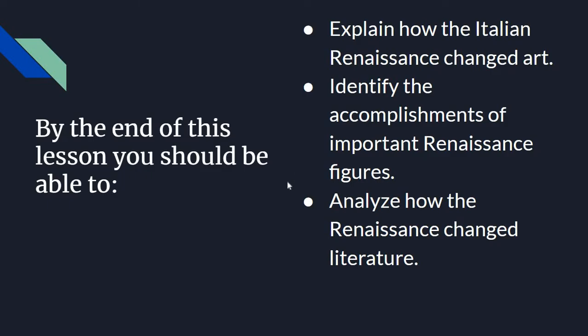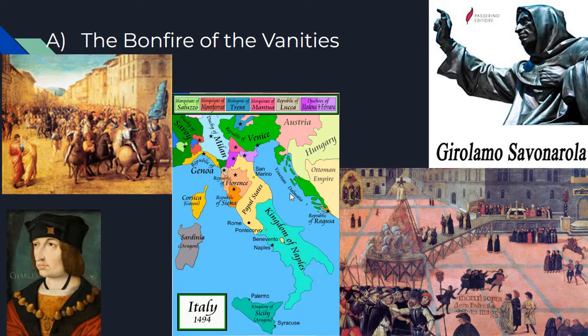Here are our basic objectives for today. As we talked about last time, the Renaissance focused on the revival of ancient texts from Greek and Roman sources and was originally centered in the city of Florence, which was controlled by the Medici family.